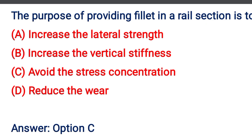Next question: The purpose of providing fillet in the rail section is to — Option A: increase the lateral strength, Option B: increase the vertical stiffness, Option C: avoid the stress concentration, Option D: reduce the wear. The correct answer is Option C: to avoid the stress concentration.